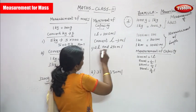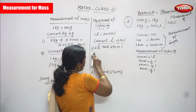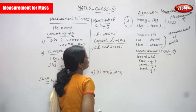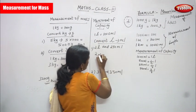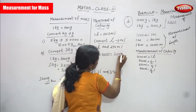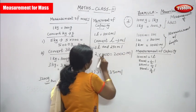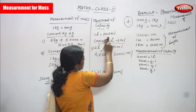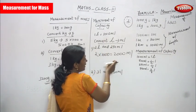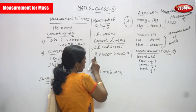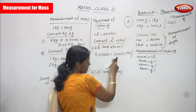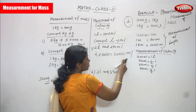Next is convert liter into milliliter. The formula is 1 liter is equal to 1000 ml. So 2 liter means 2 into 1000, and you get 2000 ml. 1 liter is equal to 1000 ml, so for 2 liters: 2 into 1000 gives 2000 ml.